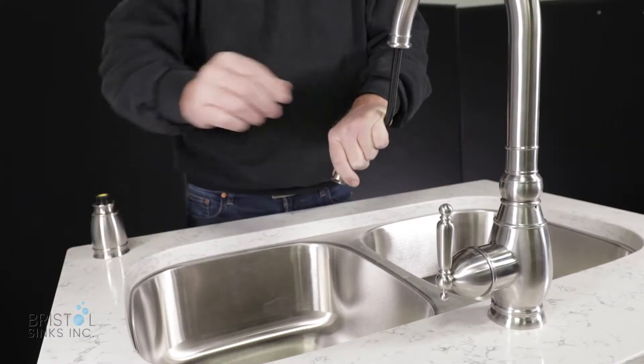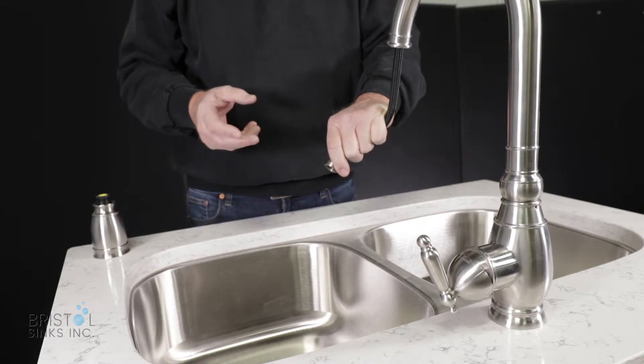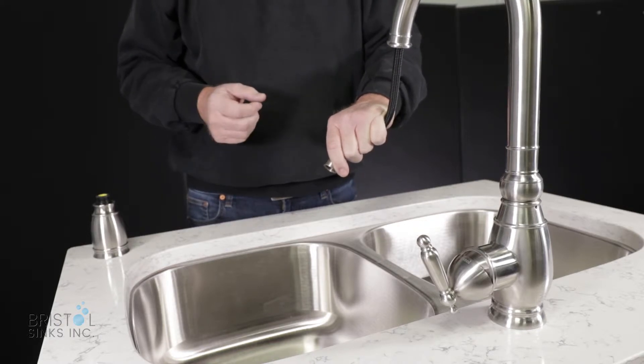If there's not, then you turn on the water and run it without the head on. If you still have low water pressure, then we'll go underneath the cabinet and look at one other area.